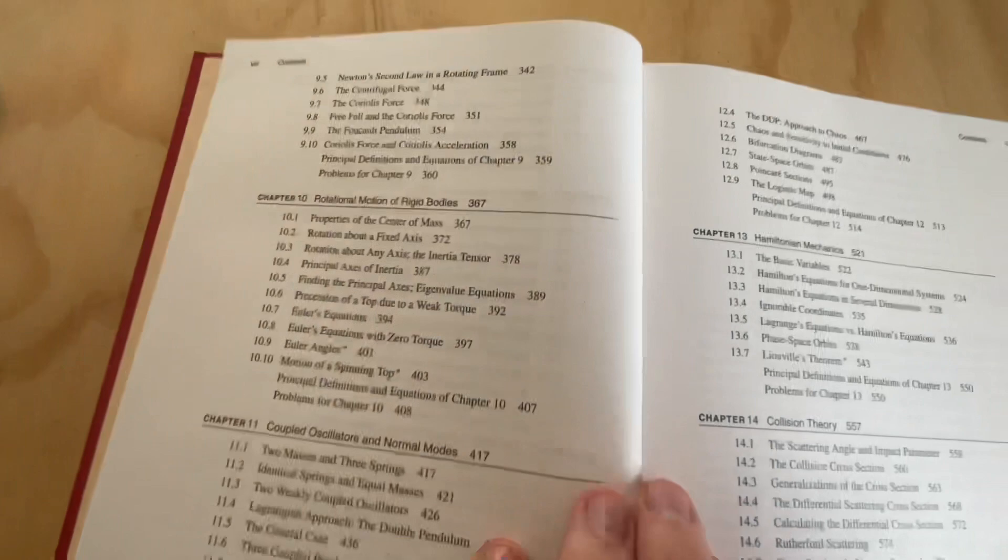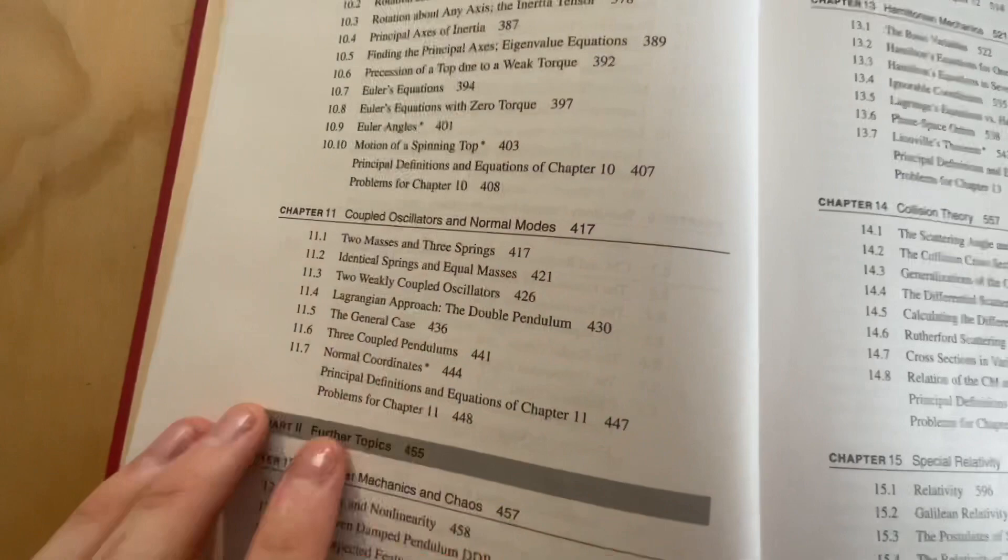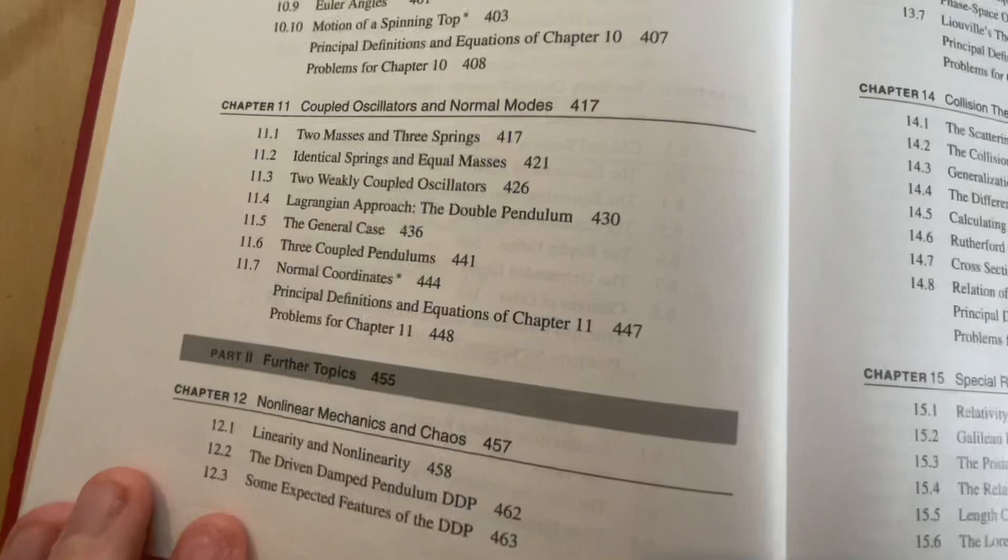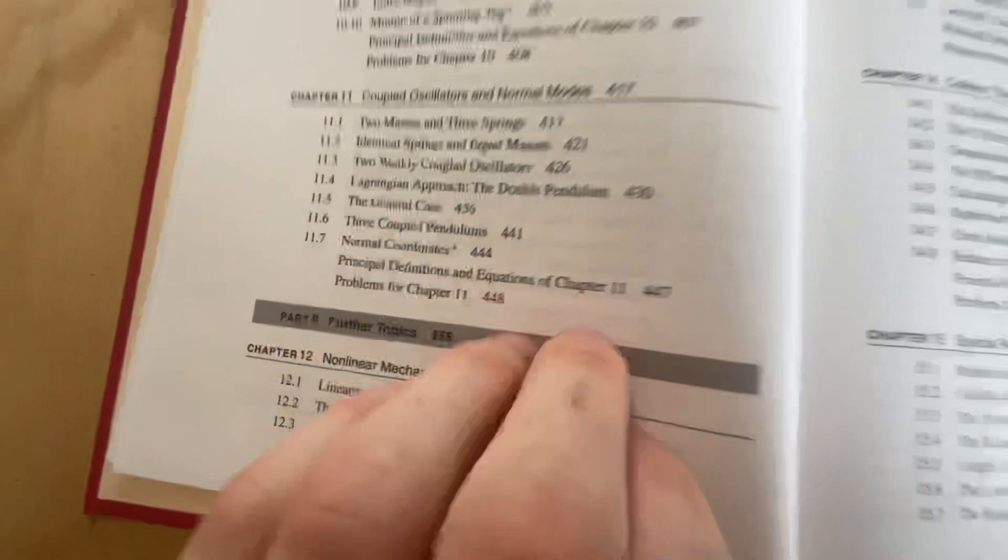Coupled oscillations in normal modes, mostly just treating the linear case. Then it moves on to further topics, first of which is non-linear mechanics and chaos. This is a really cool chapter because it's sort of filled in the gaps, especially in chapters like coupled oscillations in normal modes, where it doesn't talk about the non-linear case.